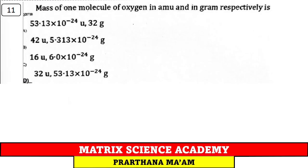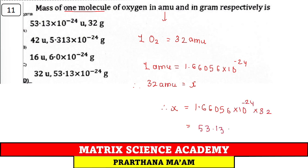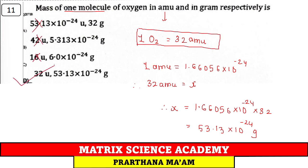Question 11: What is the mass of one molecule of oxygen in AMU and in grams? One molecule of O₂ = 32 AMU = 32 dalton. In grams: 32 × 1.66056 × 10⁻²⁴ = 53.13 × 10⁻²⁴ g. Option D.